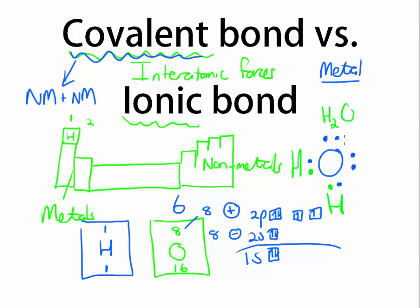H₂O is an example of a covalently bonded molecule. When we talk about non-metals that are covalently bonded, we talk about molecules. This explains why hydrogen will bond at two sites on oxygen to form H₂O. Of course, something else could have bonded to the oxygen — it's just the example we're using today.